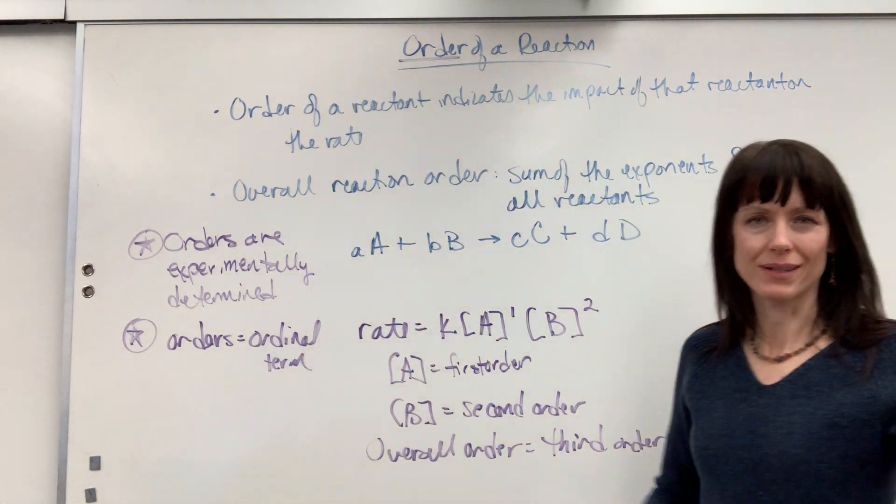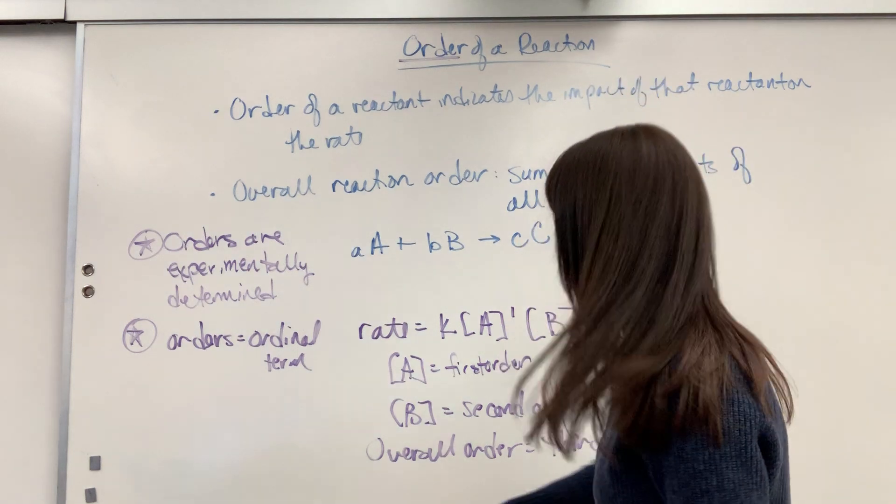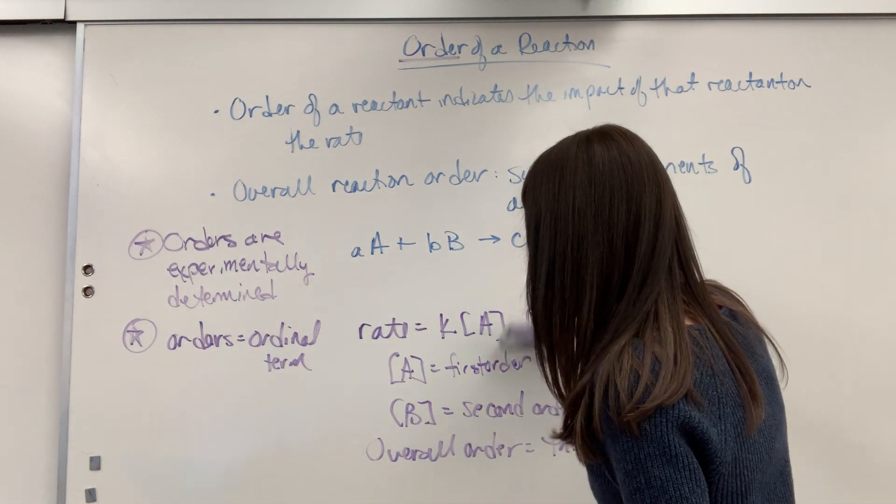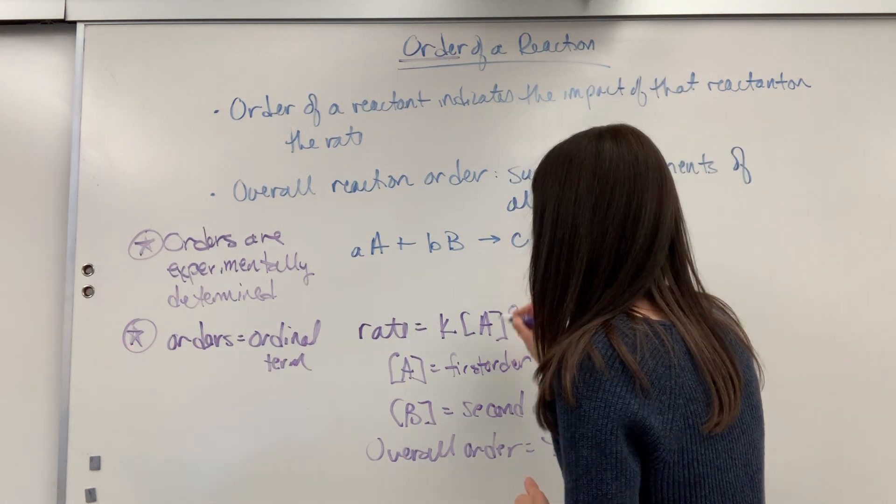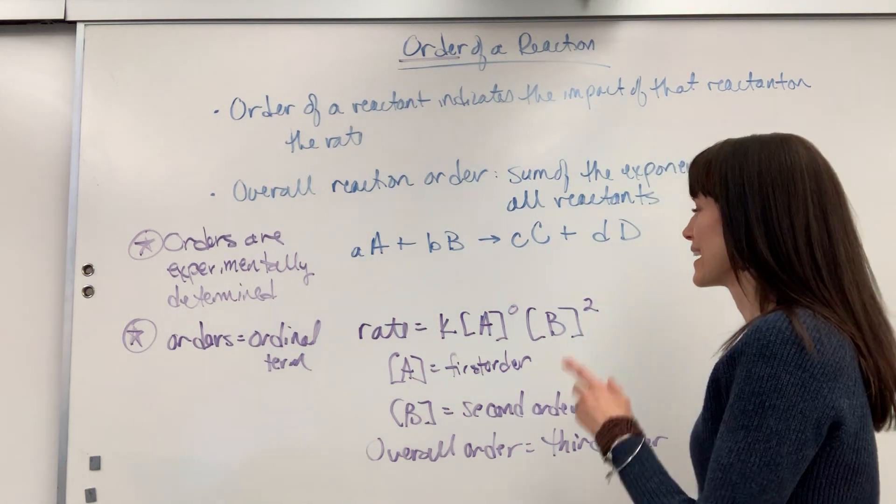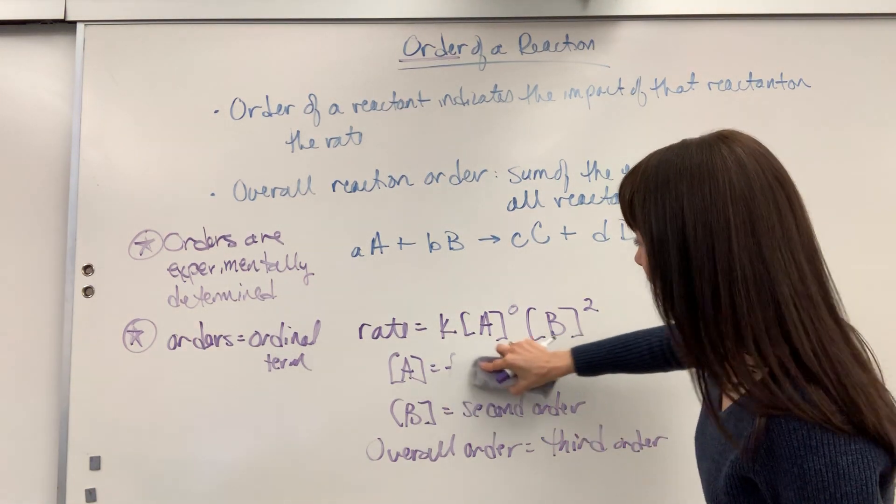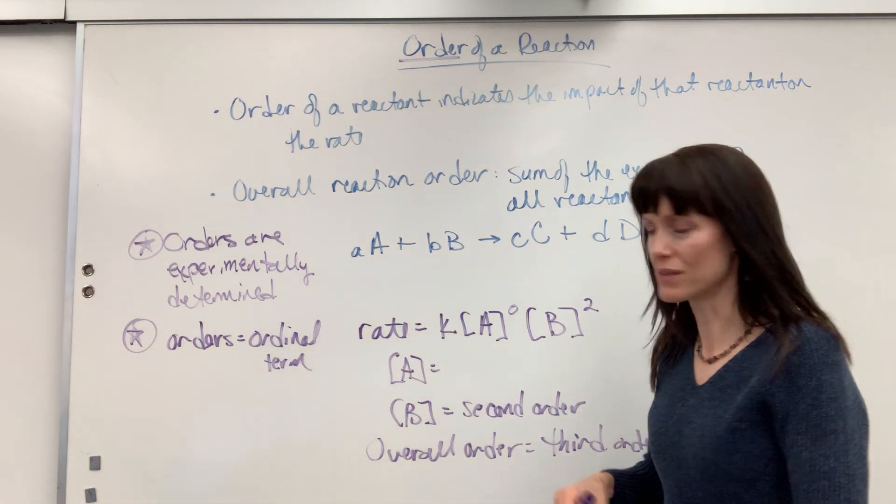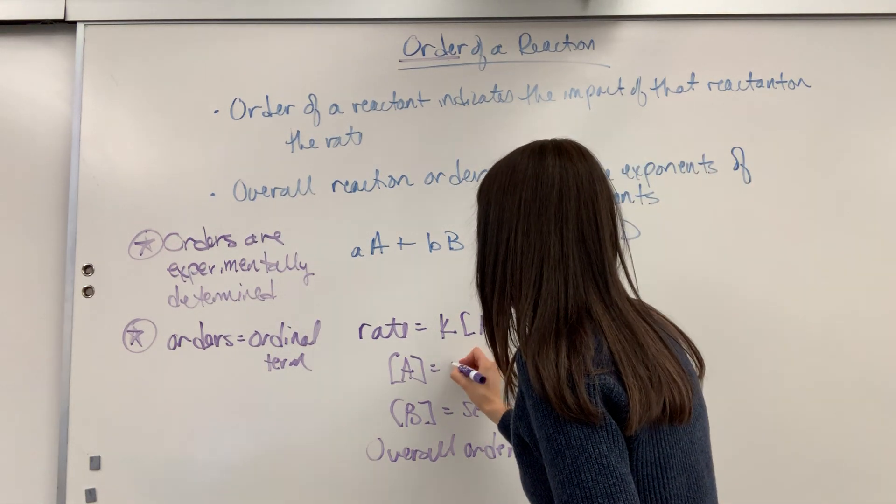Now, I'm going to throw you a curveball. So what if this was a zero, right there, a zero. Okay, a zero order, and that's how you say it. There's not going to be an ordinal number for it. We're going to say A is zero order.